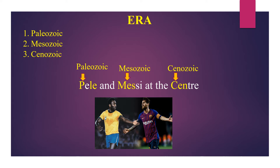For remembering the eras in correct order, imagine our football players Pele and Messi standing at the center of the stadium. The sentence to remember is: Pele and Messi at the center. From Pele, you can remember Paleozoic. From Messi, you can remember Mesozoic. From center, you can remember Cenozoic. So to remember Paleozoic, Mesozoic, Cenozoic in correct order, remember: Pele and Messi at the center.